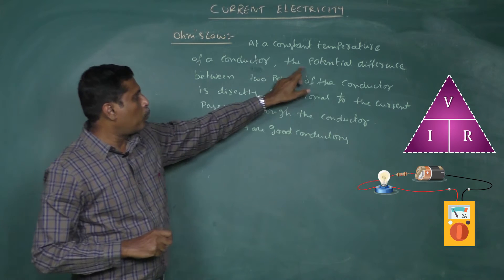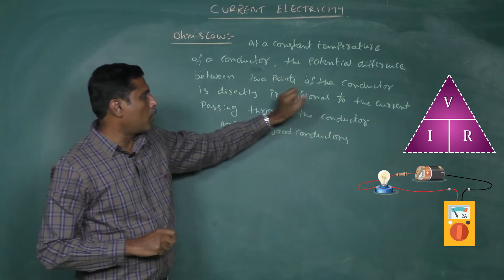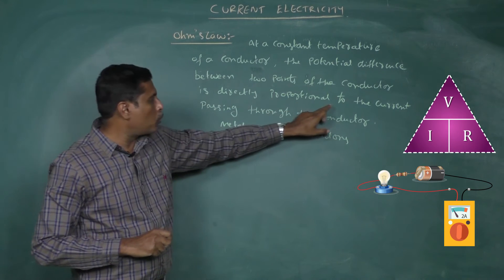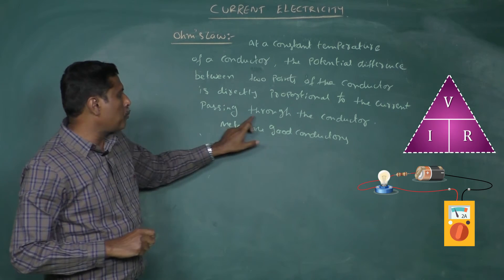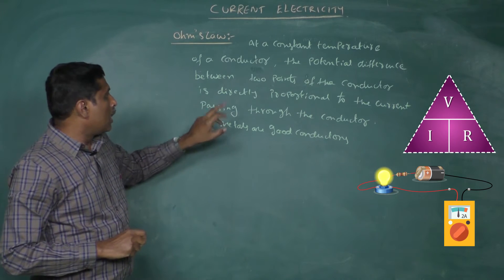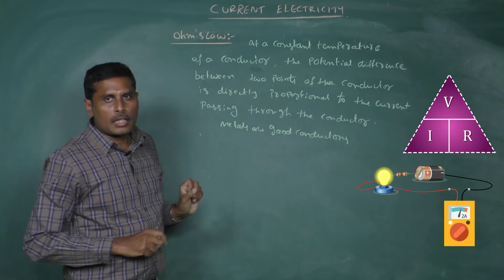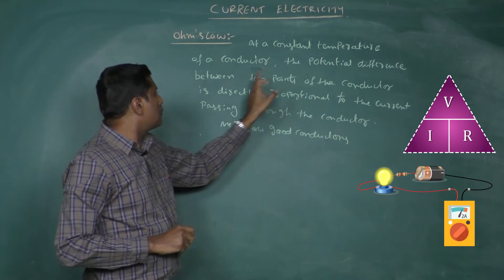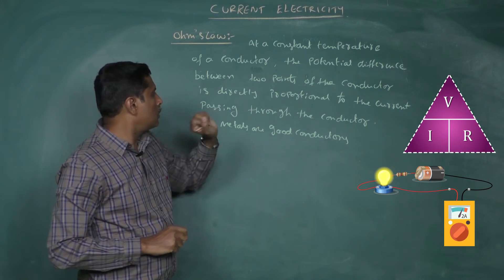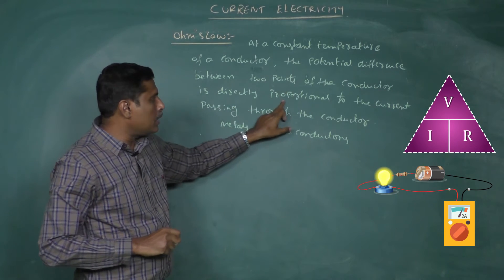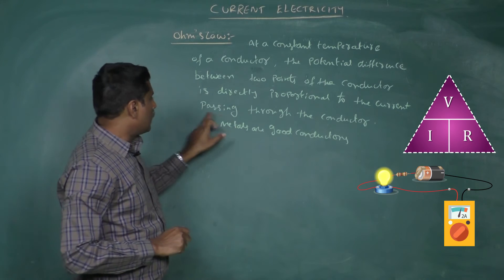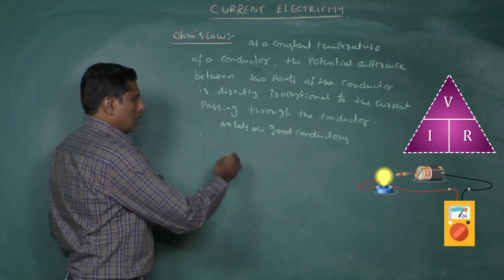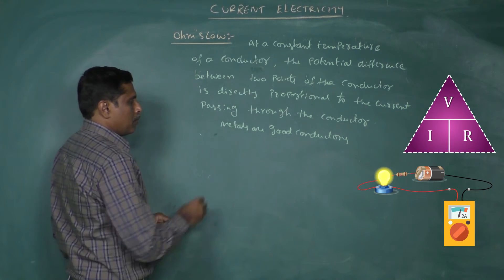It can be defined as: at a constant temperature of a conductor, the potential difference between two points of the conductor is directly proportional to the current passing through the conductor. Generally, we can use metals as conductors because metals are good conductors of electricity.